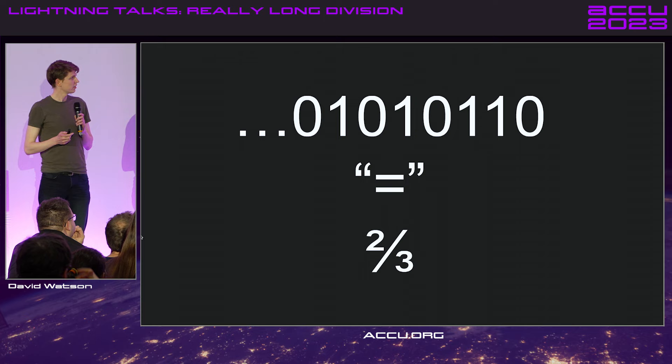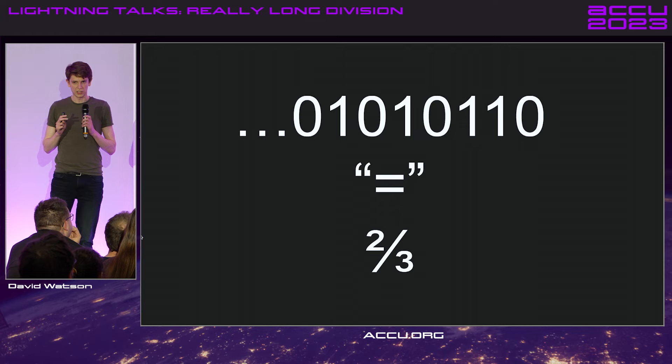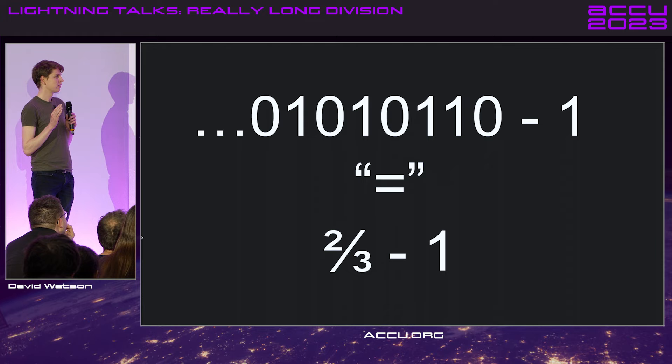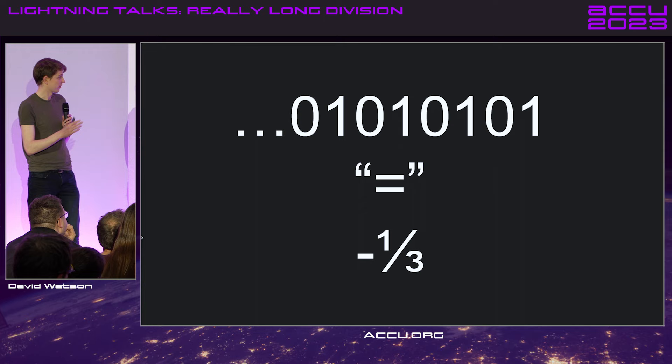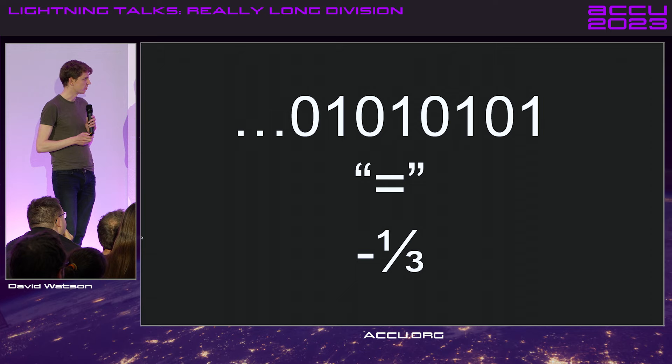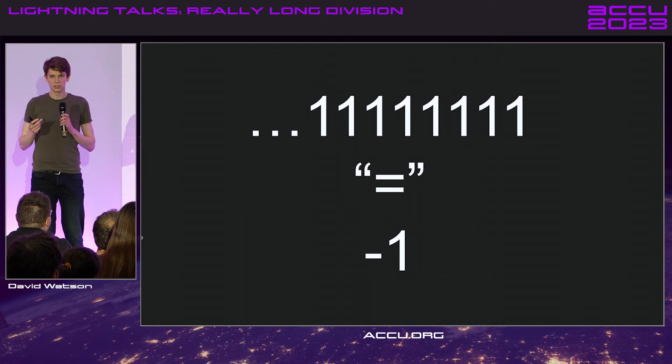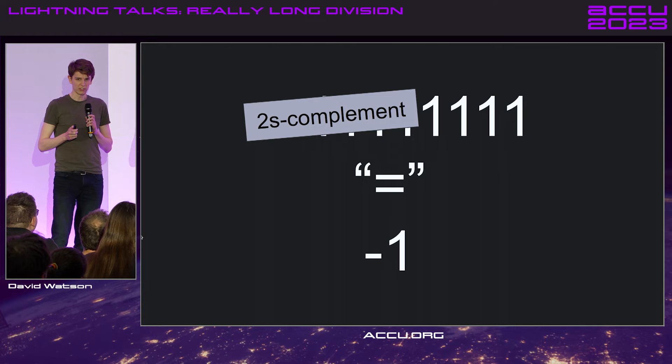And it's equal to 2 thirds. And because we're C++ programmers, we can say it's equal to 2 thirds — we can override that. So let's make sure it actually acts like 2 thirds. We'll take away 1, and this is going to be this very pretty pattern — it's just 0, 1 or 1, 0 repeating, depending on which end you start from. And that should be equal to 1 third. Let's multiply by 3 just to see if this is going in the right direction. So we get this chain of 1s, all 1s, and it's equal to minus 1. That looks suspiciously like 2's complement. That's obscured.